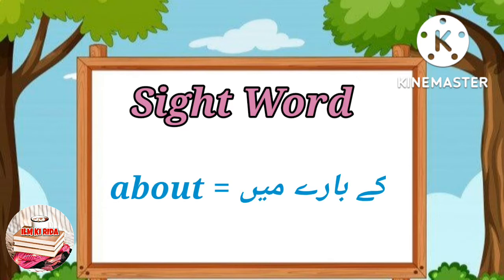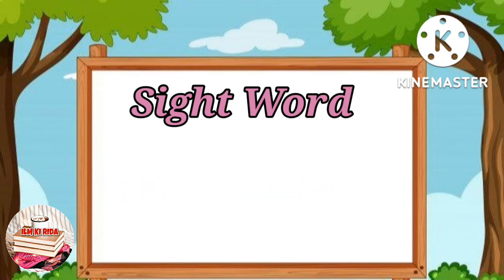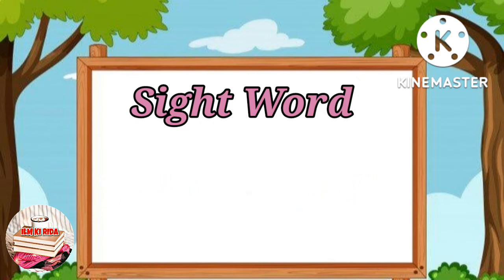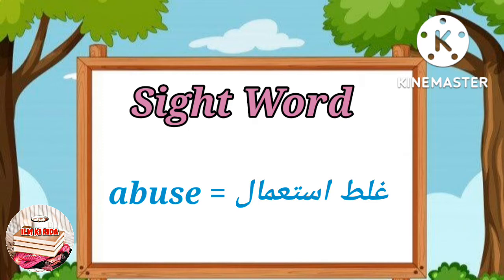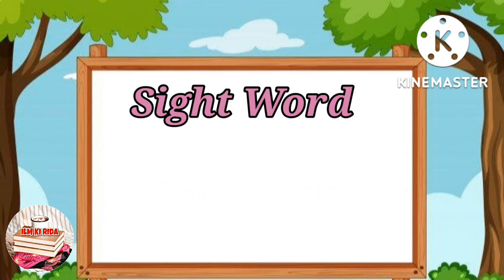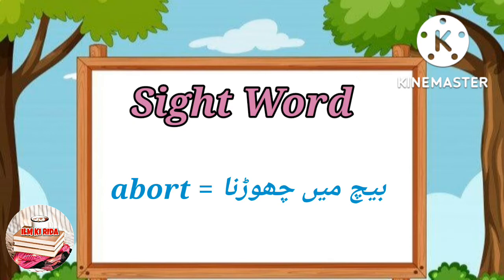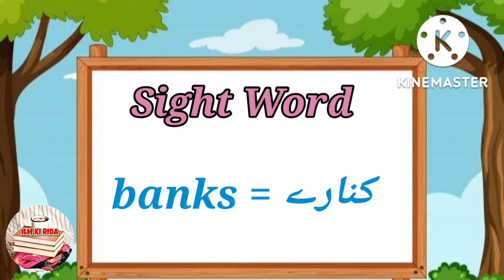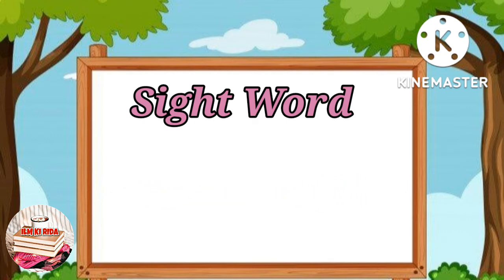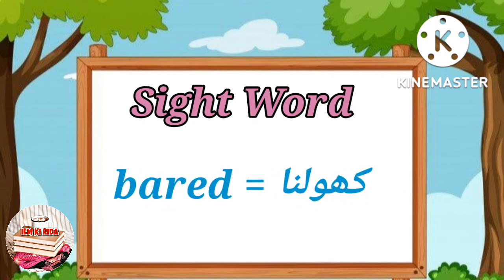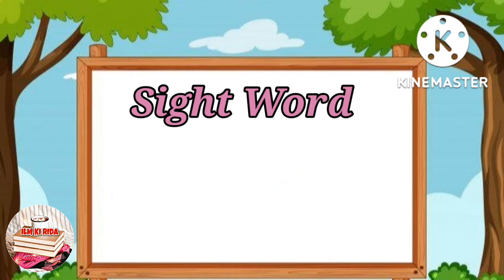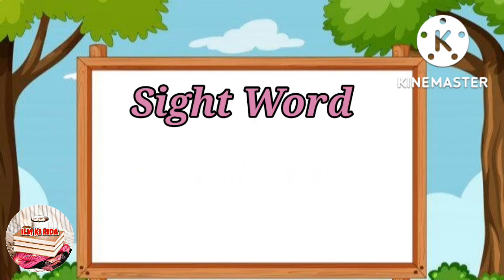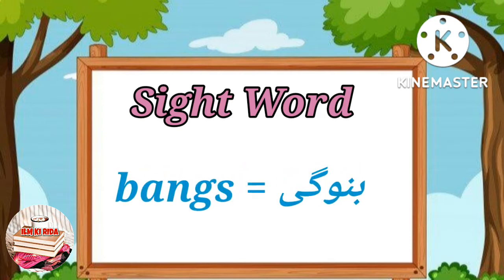About - Meaning: के बारे में. Abuse - Meaning: गलत इस्तिमाल. Banks - Meaning: किनारे. Based - Meaning: बुनियाद. Bed - Meaning: खोलना.